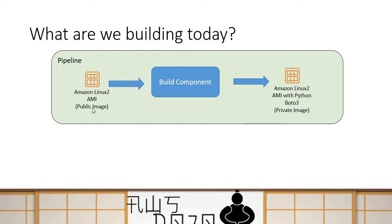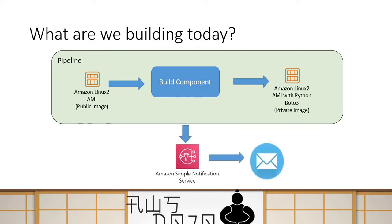Basically, you will take one Linux image and write the required customization in your build component to generate a Linux image which already has Python Boto3 SDK deployed. We'll start with a public image and move to a private image. During the pipeline execution, we will also configure a Simple Notification Service which will send us updates about the pipeline's progress through emails.